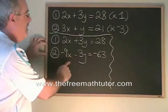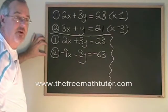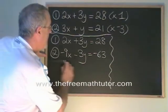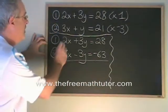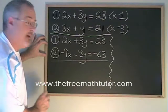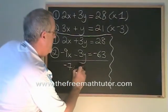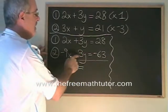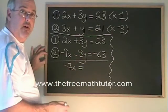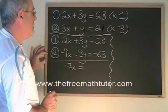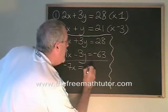Now, working with this new version of our equations, we can do the addition step that we learned before. If we add these, 2x plus negative 9x is equal to negative 7x. 3y plus negative 3y cancels. We've gotten rid of our y's, and 28 plus negative 63 is equal to negative 35.